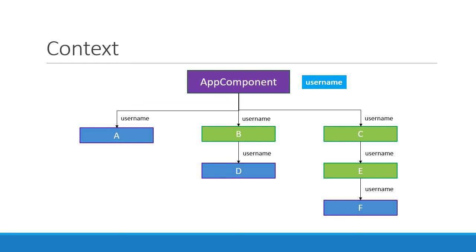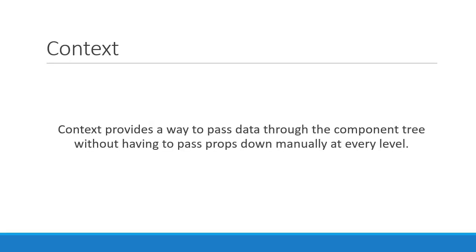What would be nice is if we could directly send data to the required component without having to manually drill down the props through every level of the component tree. This is where Context comes into picture. Context provides a way to pass data through the component tree without having to pass props down manually at every level.